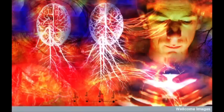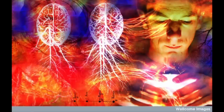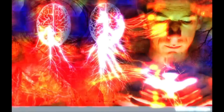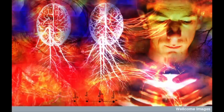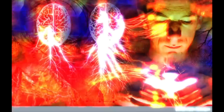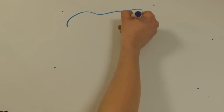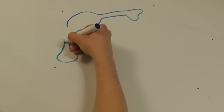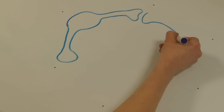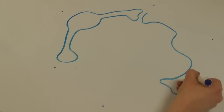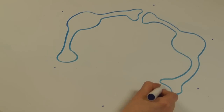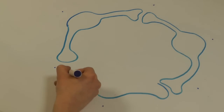In early brain development, our sensory experiences are hugely important in providing a strong or weak foundation for all future learning, behaviour and health. Our brain cells, or neurons, function by forming intricate connections which are laid down at the early stages of development.